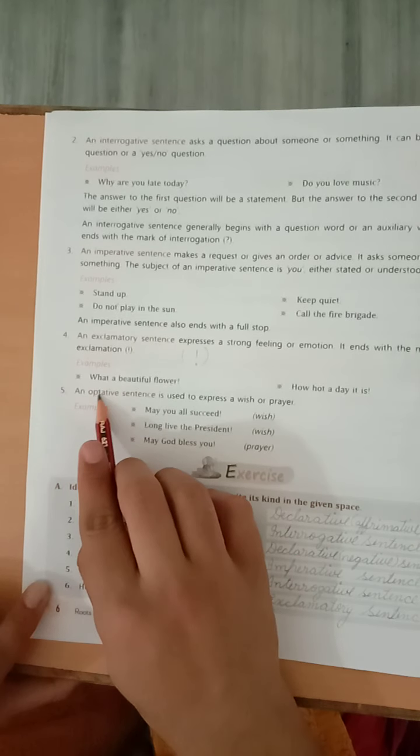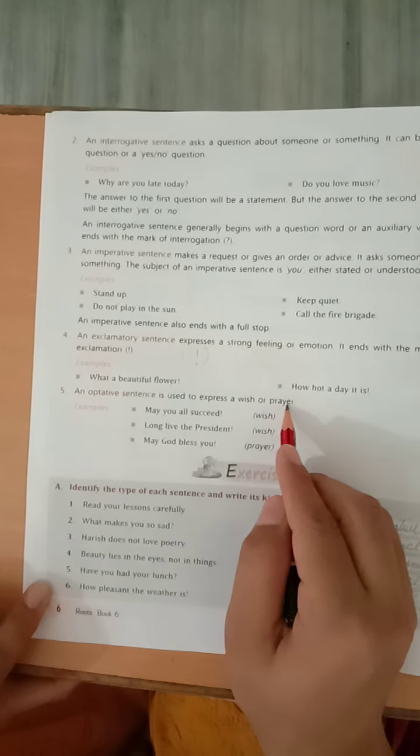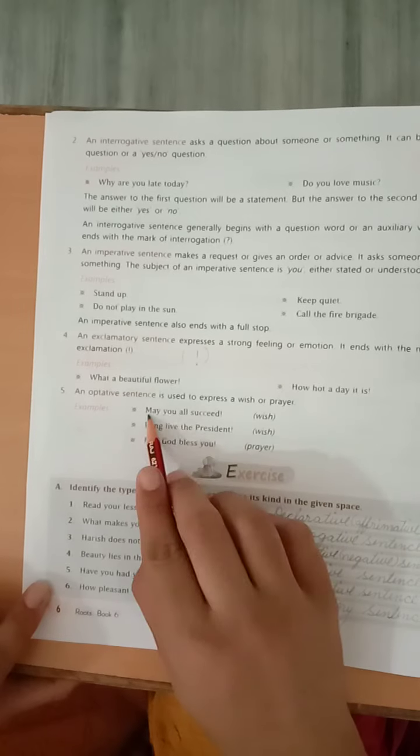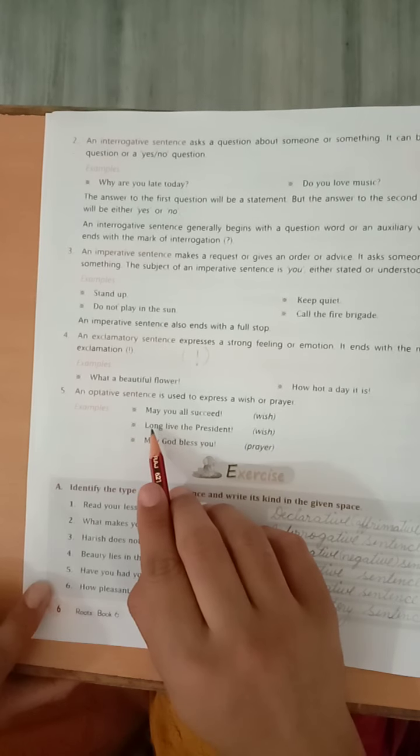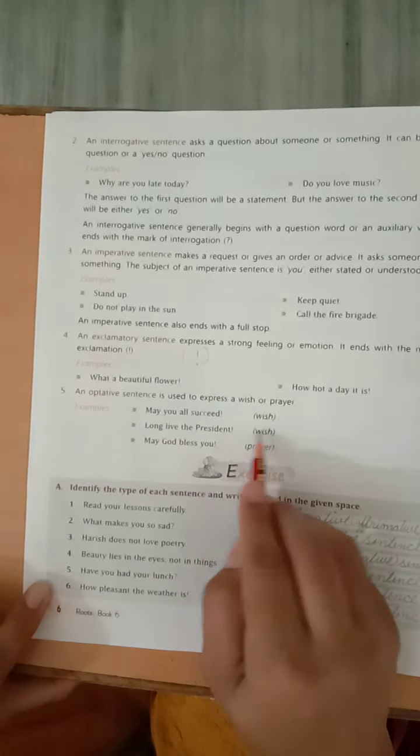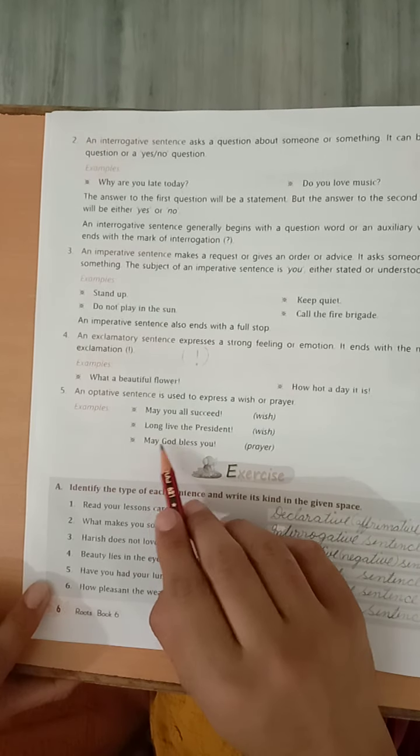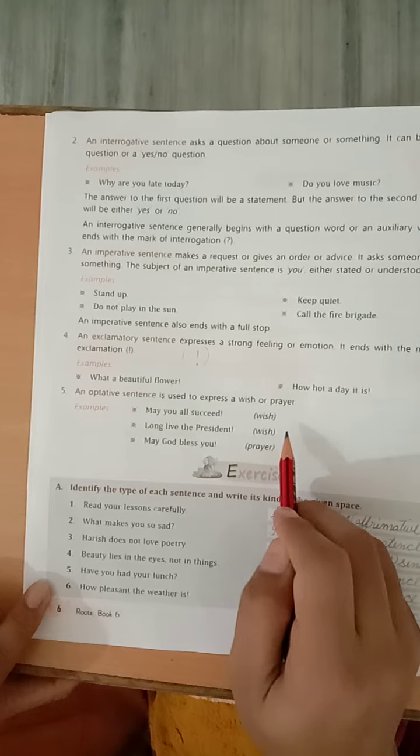And an operative sentence is used to express a wish or prayer. Iske andar aap apni wish ya apni prayer ko vyakt kar sakti ho. For example, may you all succeed. Ye wish hai. Aap poochjo, may you all succeed. Next, long live the president, wish. May God bless you. Ye, prayer kar rahe ho, wish kar rahe ho. Iske andar prayer aur wish kar sakti ho. Now, here is the exercise.